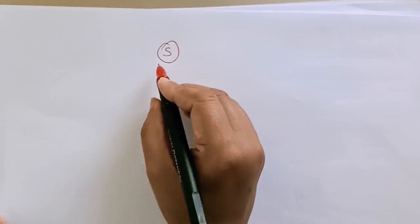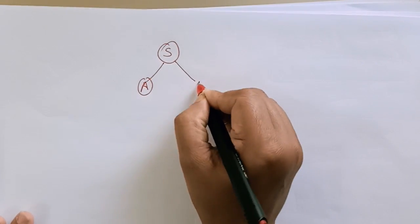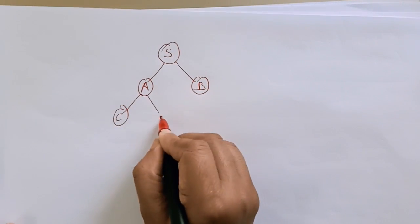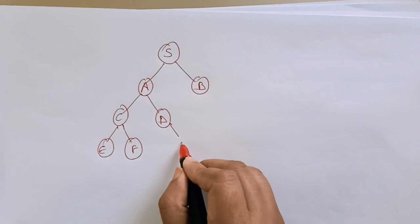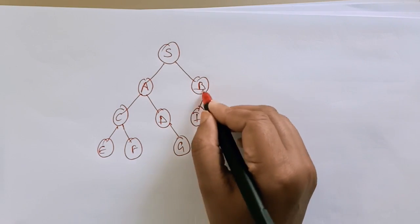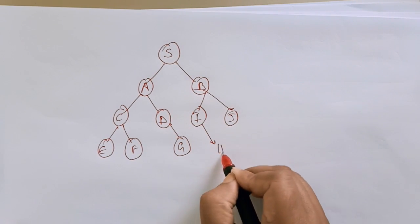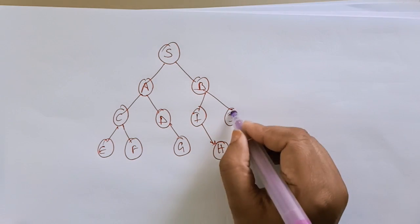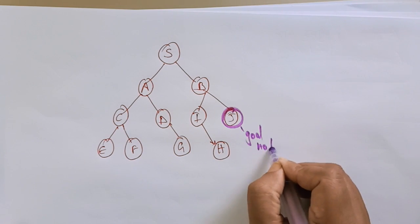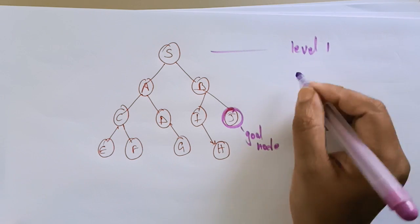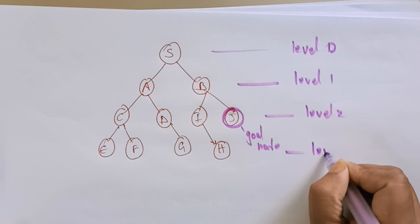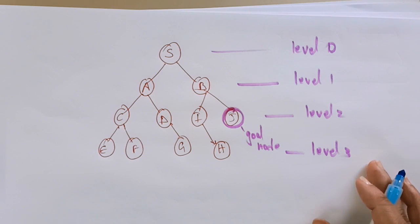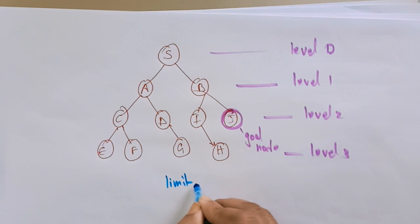Let's look at an example. Take S as the root node at level 0. Its successors are A and B at level 1. A has successors C and D, B has successors E and F at level 2. C has successors G and H, and B also connects to I. Further, J is added at level 3. J is our goal node. Our limit is set to level 2, so we only search up to level 2.